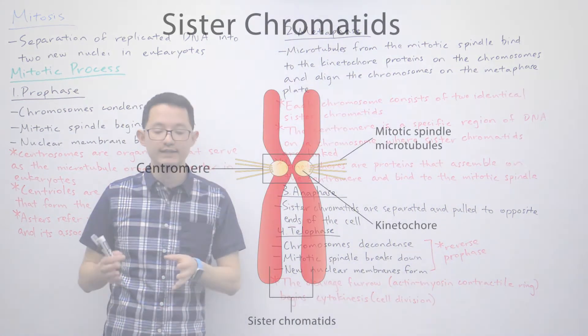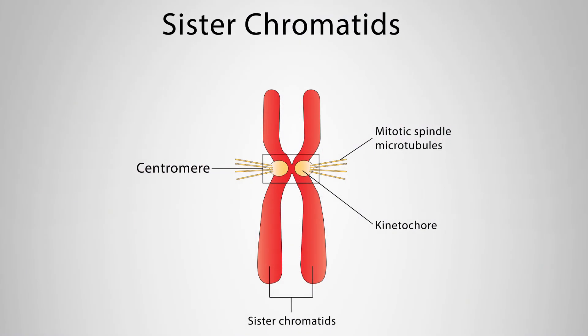You can see that on this diagram. Again, the centromere is a specific region of DNA on the chromosome where sister chromatids are linked. On top of the centromere, you can see that proteins called kinetochores assemble, and the kinetochore protein binds to the mitotic spindle.